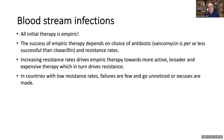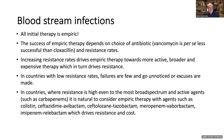In countries with low resistance rates, empiric therapy failures are few and often go unnoticed or are explained away. In high-resistance countries, even the most broad-spectrum agents face challenges, and empiric therapy with agents such as colistin, ceftazidime-avibactam, ceftolozane-tazobactam, meropenem-vaborbactam, and imipenem-relebactam is considered — which drives resistance and cost in countries like Turkey, Greece, Thailand, and Egypt.